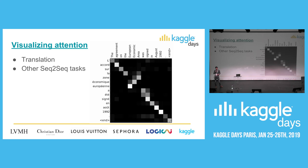Another example of built-in interpretability: attention mechanisms, used in many sequence-to-sequence models, also improve results and can be visualized to understand which part of the input the network is looking at when translating a sentence. The attention mechanism is now a standard building block and works really nicely with visualization.